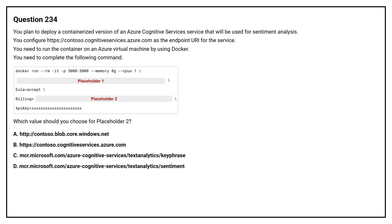Question number 234. You plan to deploy a containerized version of an Azure Cognitive Services service that will be used for sentiment analysis. You configure contoso.cognitiveservices.azure.com as the endpoint URI for the service. You need to run the container on an Azure virtual machine by using Docker. You need to complete the following command. Which value should you choose for placeholder 2?